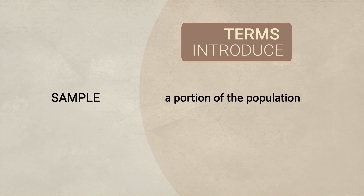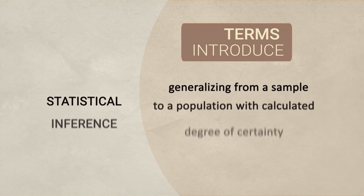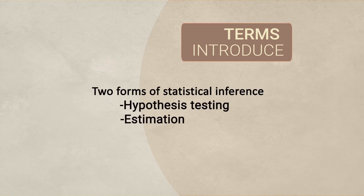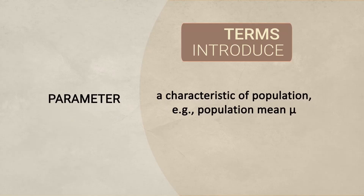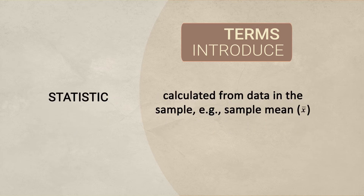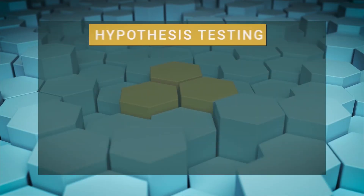For airlines: the hypothesis is 'low-cost airlines are more likely to have delays than premium airlines'; the null is 'low-cost and premium airlines are equally likely to have delays.' For flexible work: the hypothesis is 'employees with flexible working hours will report greater job satisfaction than those with fixed hours'; the null is 'there is no relationship between working hours flexibility and job satisfaction.' Key terms include population, sample, statistical inference, hypothesis testing, estimation, parameter (population mean, mu), and statistic (sample mean, x-bar).